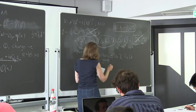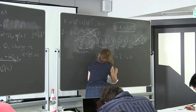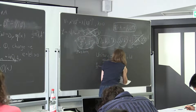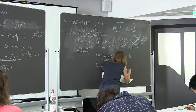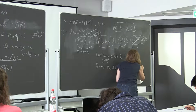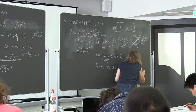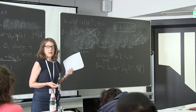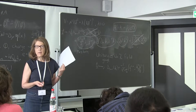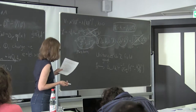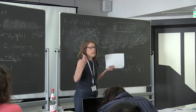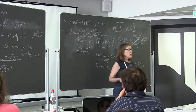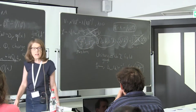In unitary gauge, the propagator for the gauge field is Δ(k) = −i/(k² − M_A²) · [g_μν − k_μ k_ν / M_A²]. The reason this is bad is that the k_μ k_ν term grows and diverges at high energies, so it doesn't have nice convergence properties.